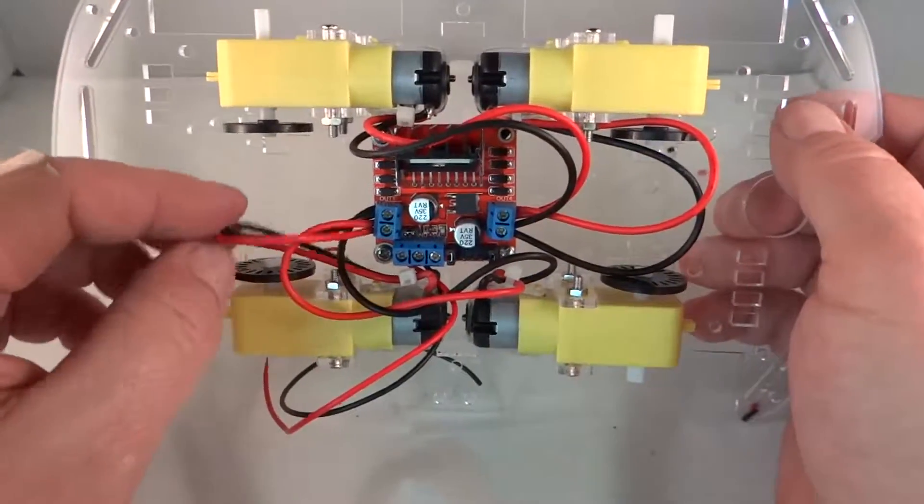Now we feed these up through one of these holes here. I think I'm just going to try to get something close to the motor here so we can get as much line length as we can here up to the controller board. And there we go.